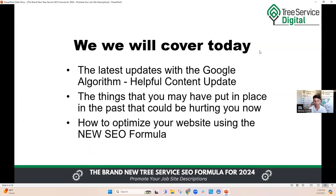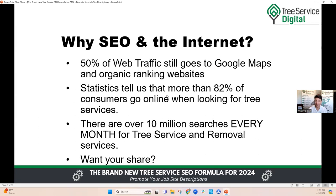Here's what we're going to cover today: the latest updates with the Google algorithm called the Helpful Content Update — they made a big sweeping change toward the end of 2023, and then just recently in March 2024, about three to four weeks ago, they refined the entire algorithm update. We'll go through the things you may have put in place in the past that could be hurting you now, and how to optimize your website using the new SEO formula.